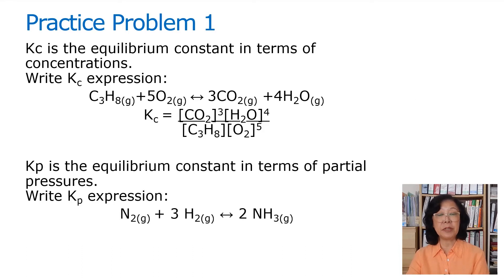Such as in the Haber process, the making of ammonia. Kp is equal to the partial pressure of ammonia raised to the power of 2 over the partial pressure of nitrogen and over the partial pressure of hydrogen raised to the power of 3.